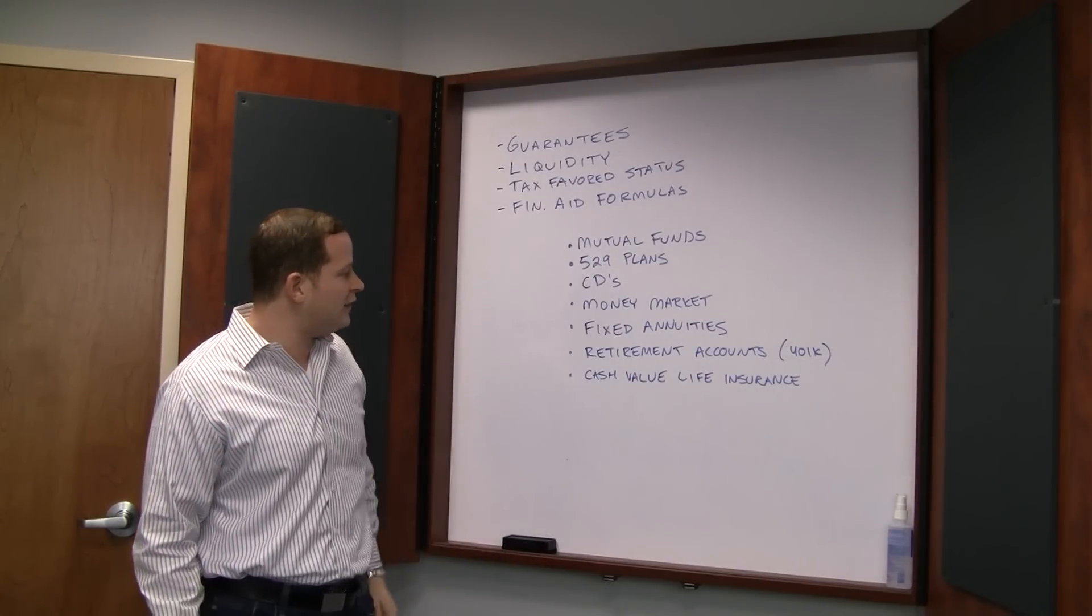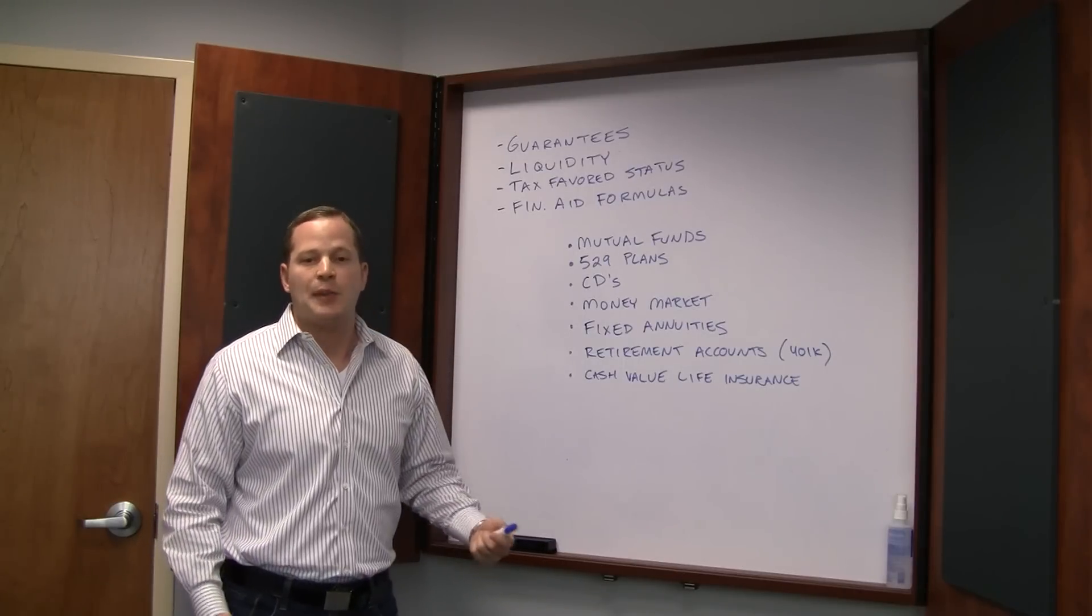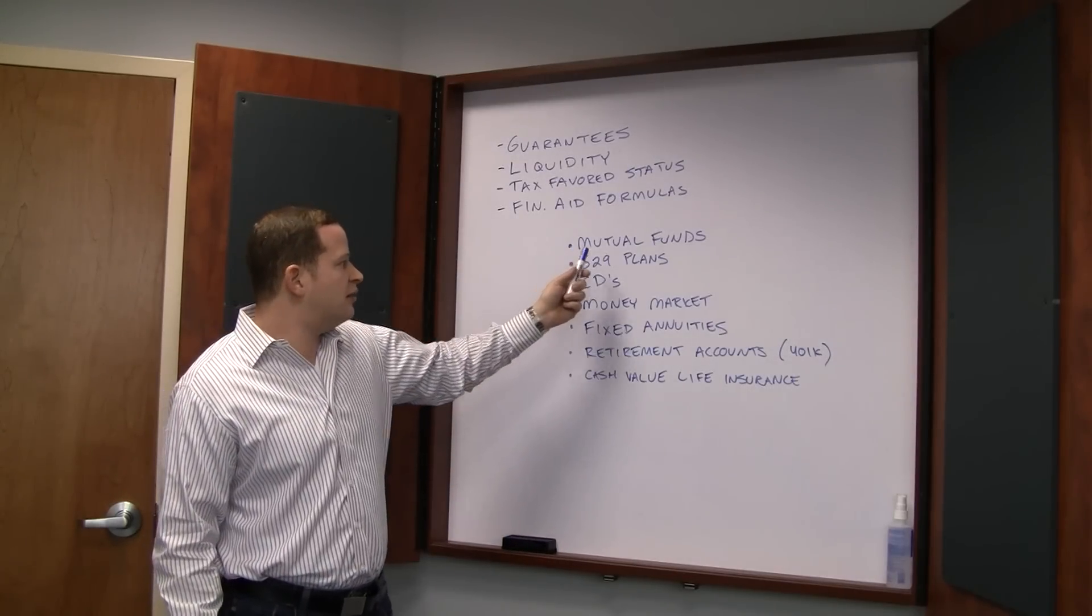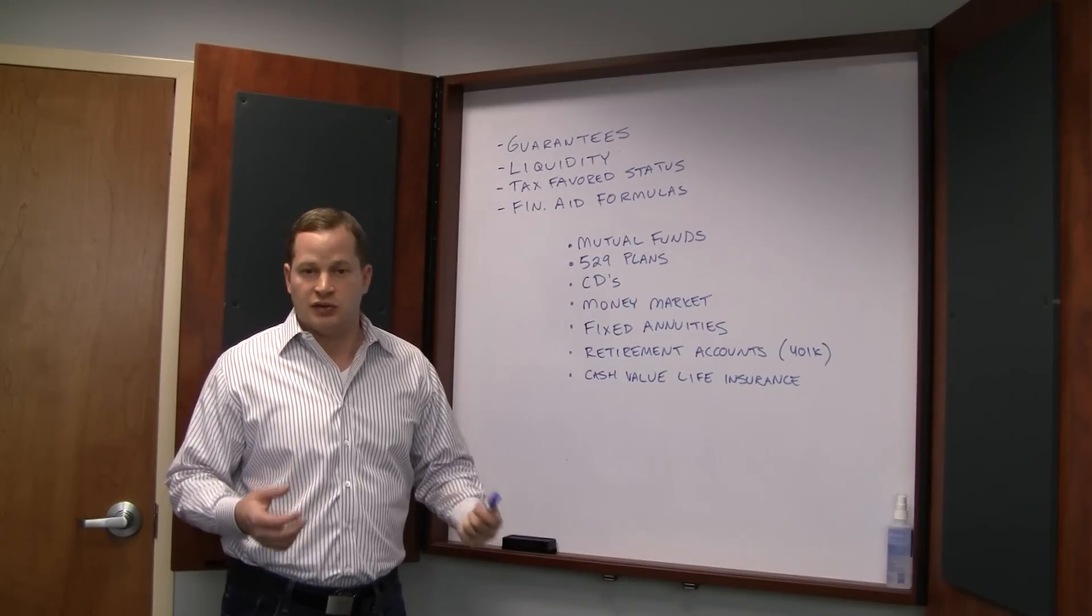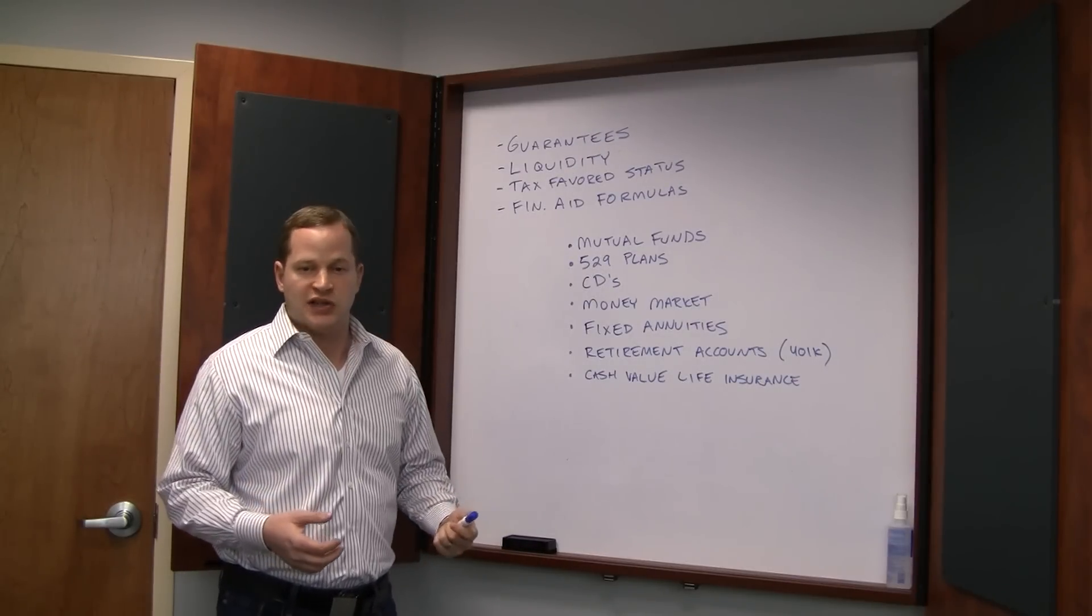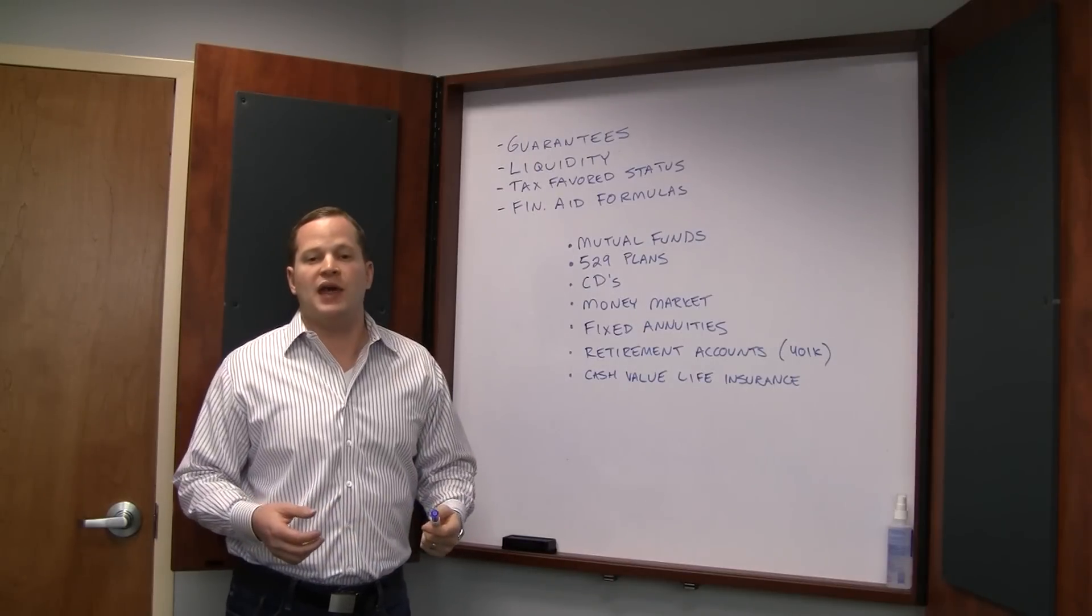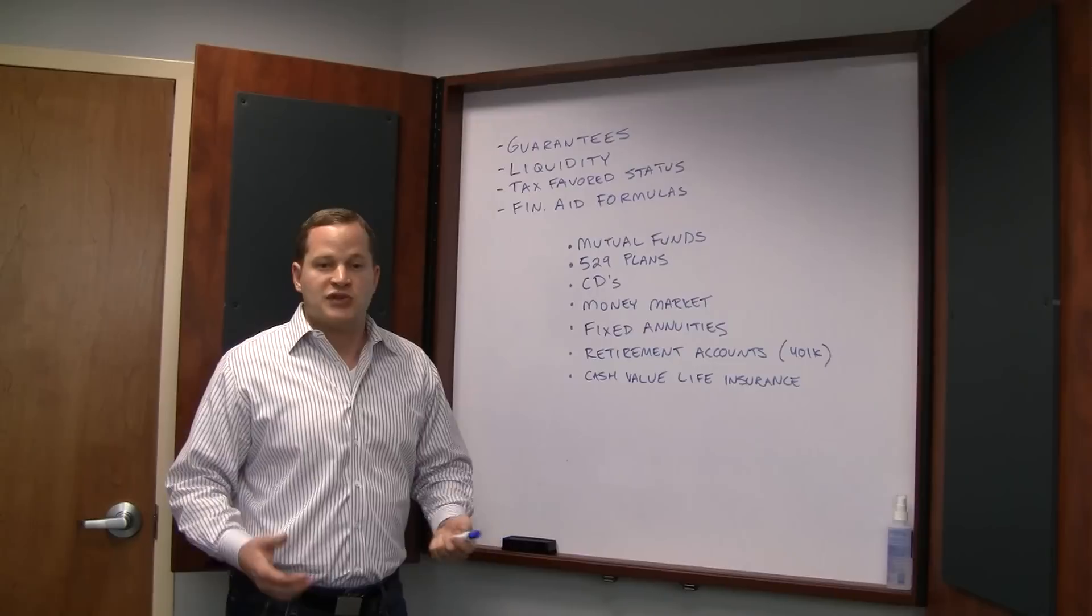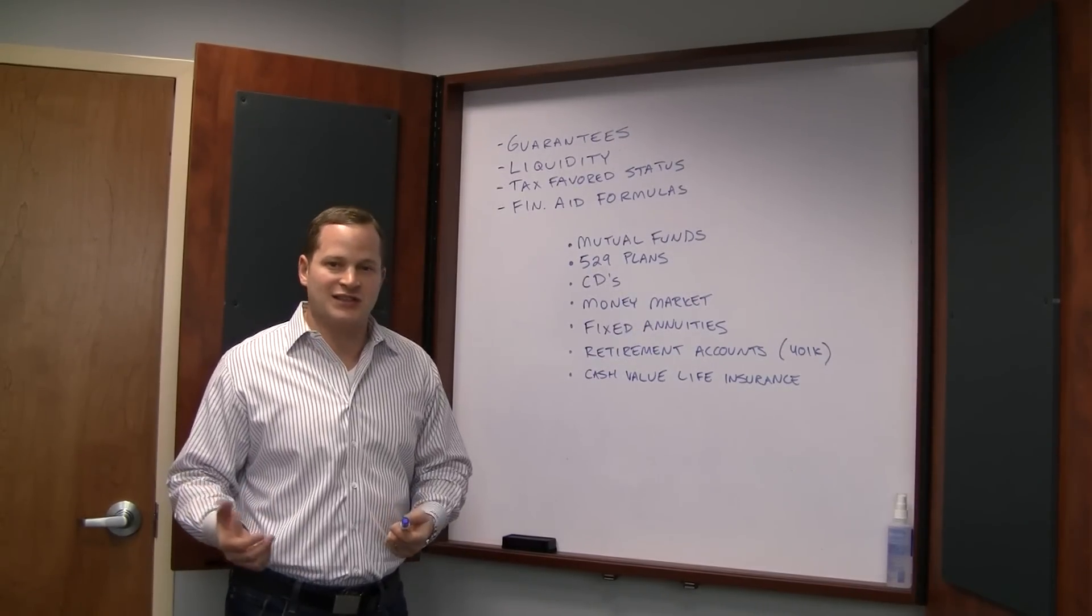We've highlighted seven different plans that are probably the most common options that parents have nowadays. To run through this list: Mutual funds - you can put money that you're saving for college into stock or bond mutual funds. Some of the upsides there are that there's unlimited potential for growth, so that's one of the upsides.